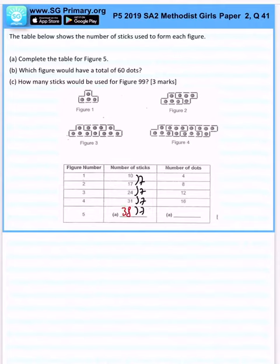Similarly, plus 4, plus 4, plus 4, so this will be 20. Quite simple. Now part (b), which figure will have a total of 60 dots? Okay, so first understand that the pattern for the number of dots.